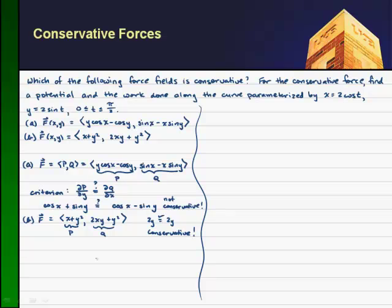So we found that b is conservative. And since we know it's conservative, we want to find a potential and the work done along a certain curve parameterized by these x and y values.